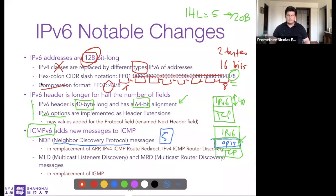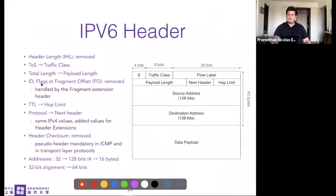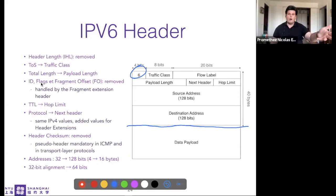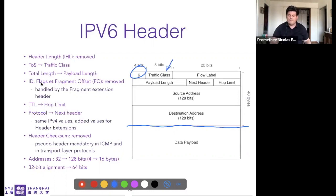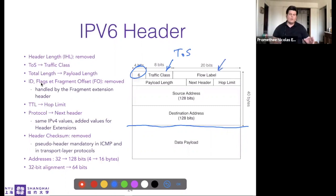ICMPv6 has been updated with new messages, including the Neighbor Discovery Protocol with five new message types. The IPv6 header is 40 bytes. The version field is shared with IPv4 - a dual-stack router uses it to triage packets to the right protocol. The traffic class replaces the IPv4 ToS field and is used for quality of service. There's also a flow label related to MPLS.